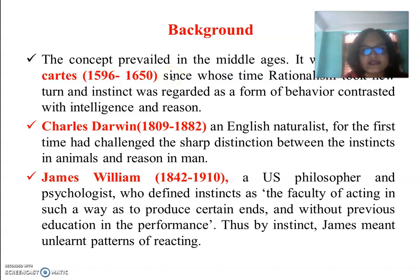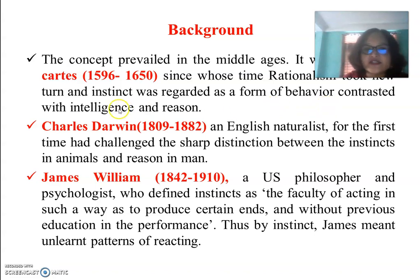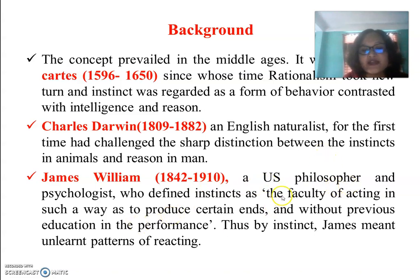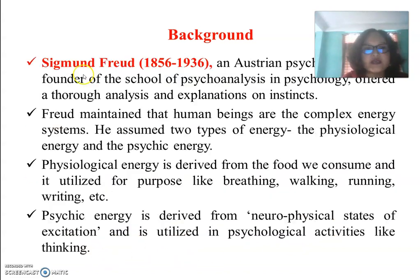The concept of instinct prevailed in the Middle Ages but was largely discarded during the period 1596 to 1650, since whose time rationalism took a new turn and instinct was first regarded as a form of behavior contrasted with intelligence and reason. Charles Darwin (1809–1882), an English naturalist, for the first time challenged the sharp distinction between instinct in animals and reason in men. William James (1842–1910), a U.S. philosopher and psychologist, defined instinct as the faculty of acting to produce certain ends without previous education.